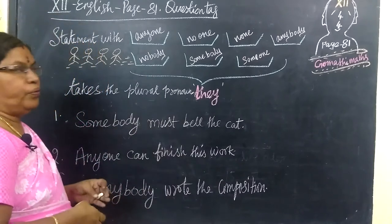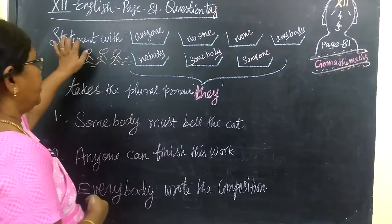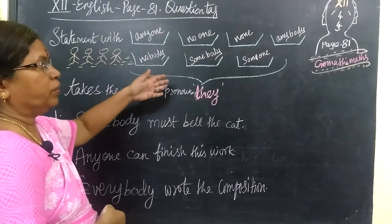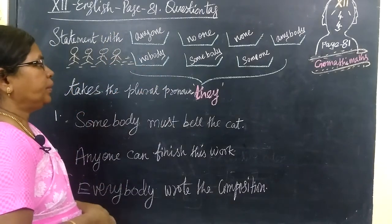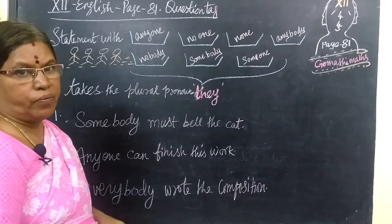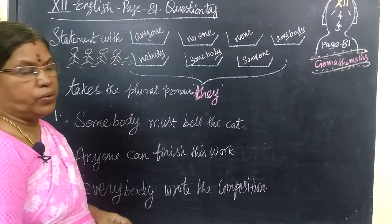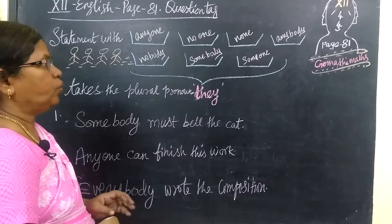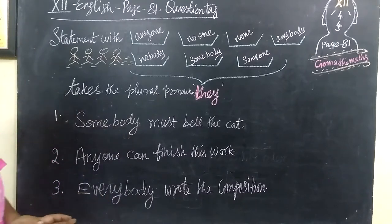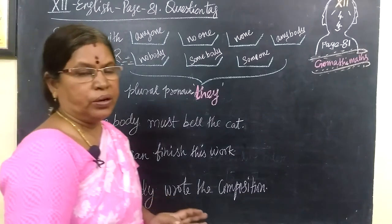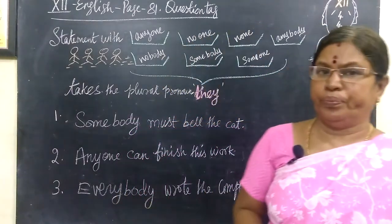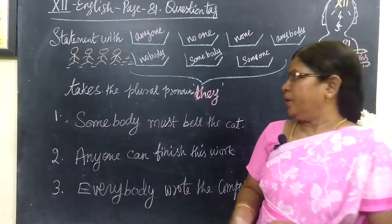If you find these words in a statement — anyone, no one, none, anybody, nobody, somebody, someone — all these words refer to plural form. Remember: anyone, no one, none, anybody, somebody, nobody, someone — all these words are treated as plural.